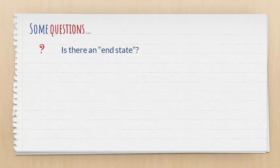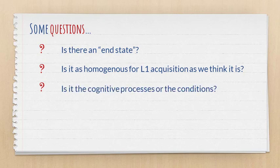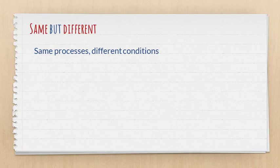Now, scholars who question these differences are going to raise different questions. Usage-based approaches raise three questions: First, is there really an end state — an ultimate attainment? Does it end at some point? Second, is it as homogeneous for L1 acquisition as we think it is? Do all monolingual native speakers have the same linguistic system in their heads? And third, are the differences between L1 and L2 acquisition due to differences in the cognitive processes or in the conditions? Many scholars suggest they are the same but also different — the processes are very similar, but the conditions are very different, which may explain the variability in ultimate attainment.